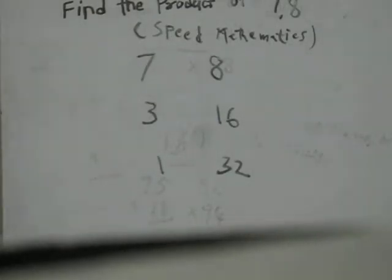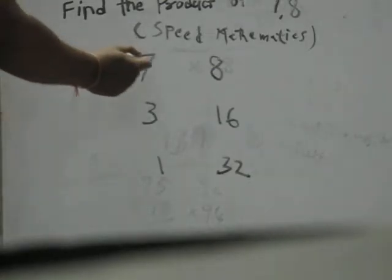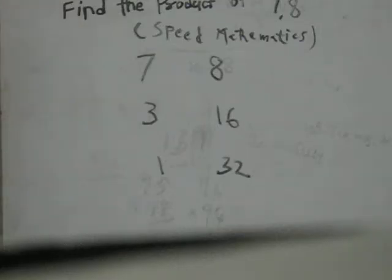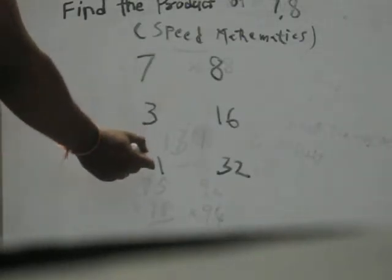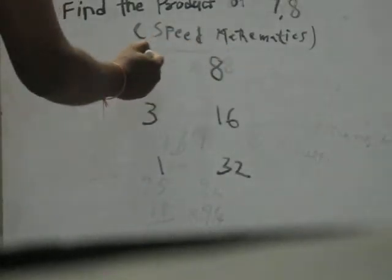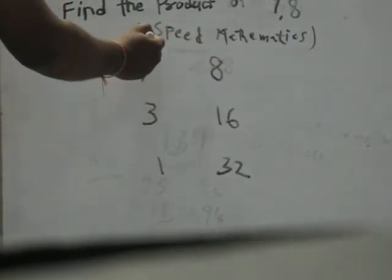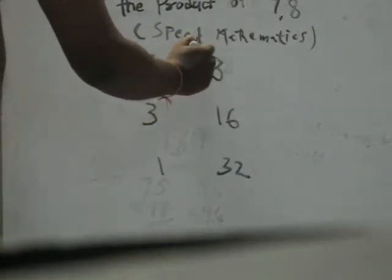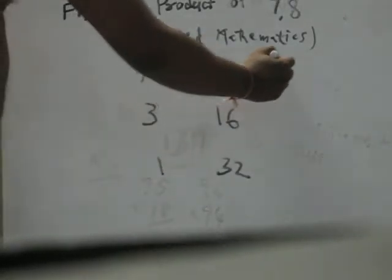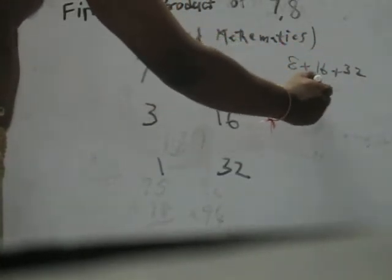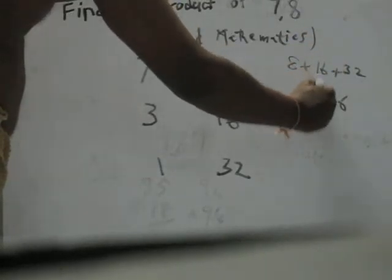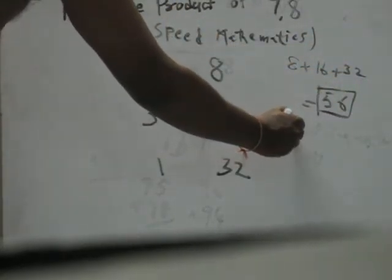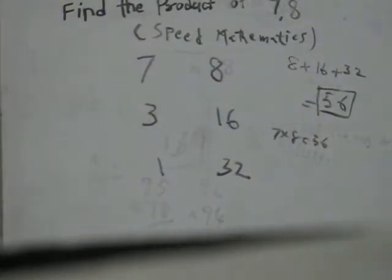Now, what is the answer? When you compare in the left hand direction, all are odd numbers. This is odd, this is odd, this is odd. In the right side, add all the values where the odd numbers are there. Sum all these 3 because all are odd numbers. 8 plus 16 plus 32. 8 plus 6 is 56. In this way, practice some more examples.